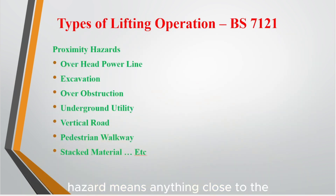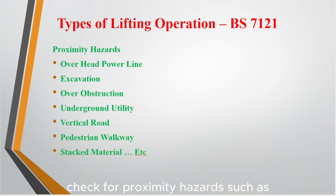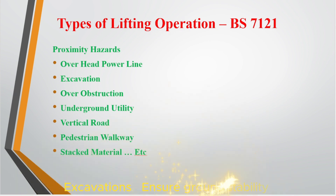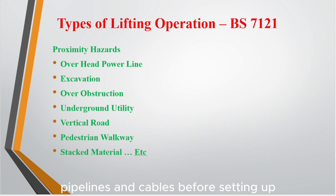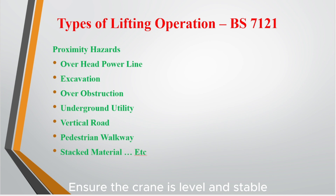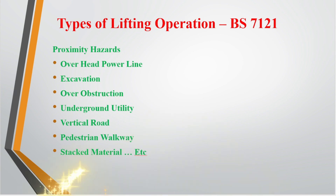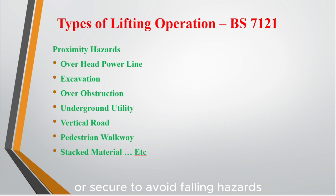A proximity hazard means anything close to the lifting area that could cause danger. Before starting any lift, check for: overhead power lines — maintain safe clearance distance; excavations — ensure ground stability; overhead obstructions — watch out for nearby structures or other cranes; underground utilities — mark pipelines and cables before setting up; vertical roads or slopes — ensure the crane is level and stable; pedestrian walkways — barricade and control people movement; stacked materials — remove or secure to avoid falling hazards. Identifying and controlling proximity hazards is key to preventing accidents.